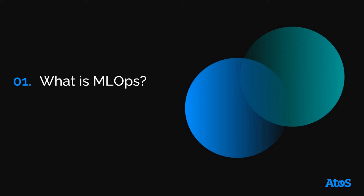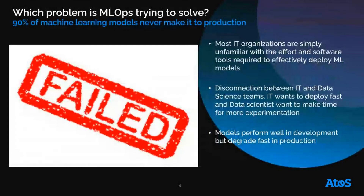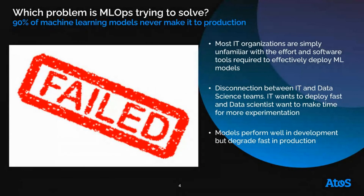By browsing the web, we figured out that MLOps is all the rage right now. It is not research — it is already in use in a lot of production environments. The very first thing you should be aware of is that 90% of ML models never make it to production, and this is massive. There are several reasons why AI models fail to make it to production, but I would like to highlight the three main ones.